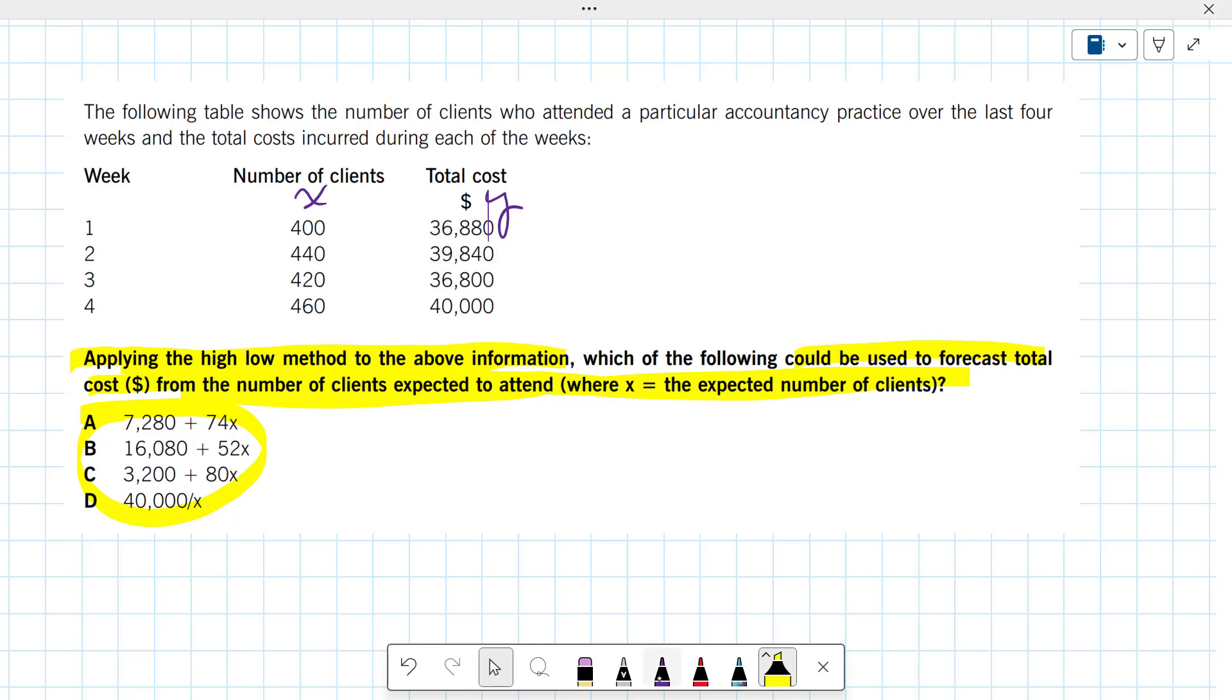And it'll look like this. That X is the number of clients, and that Y is the total cost. And let's help this company do this.